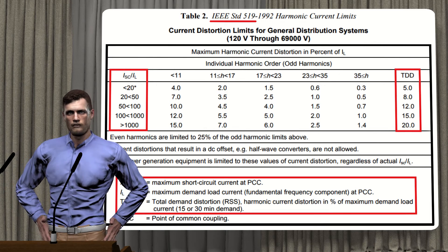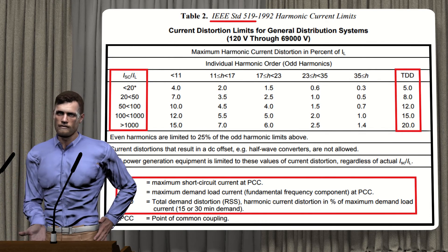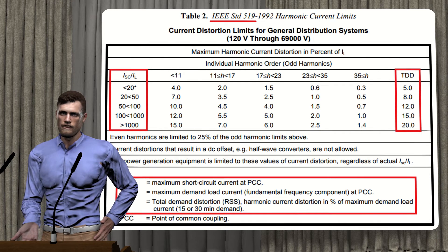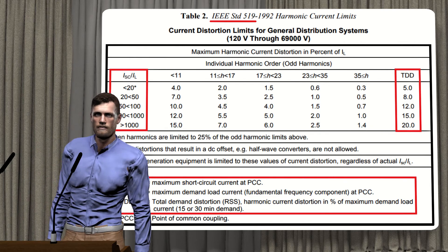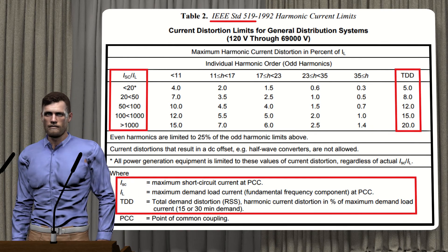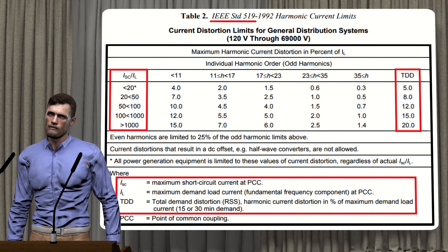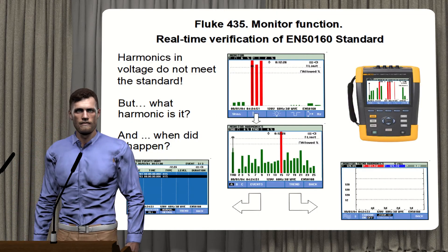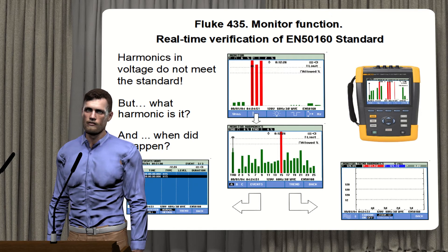As was the case for the voltage THD, these values are specified for the common coupling point, or PCC. After having seen all this, it no longer seems so complicated to carry out a harmonic analysis. We just have to make the measurements and compare them with these limits. But to further simplify the technician's work, and avoid having to remember the limits of each voltage harmonic and the voltage THD, analyzers such as the Fluke 435 have the N5160 standard memorized.